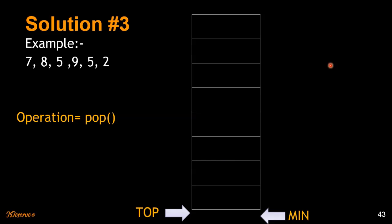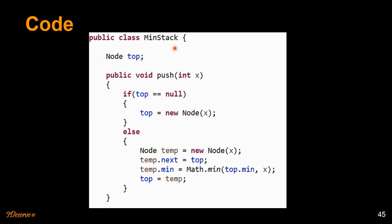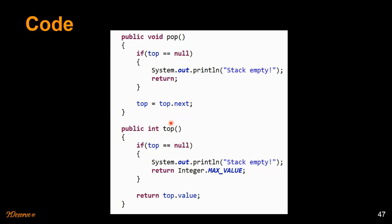I will be showing code for solution 3. Here is the node data structure where we keep track of the value and the minimum. Then we have a MinStack class maintaining the top element. Whenever a new element comes in via the push function: if top is null, we set top as the new node. Otherwise, we compare the new value x with top's minimum — if x is less, we update the minimum to x. Then top becomes the new element. The min function simply returns top.min. The top and pop functions return the top element's value and remove the top element respectively.